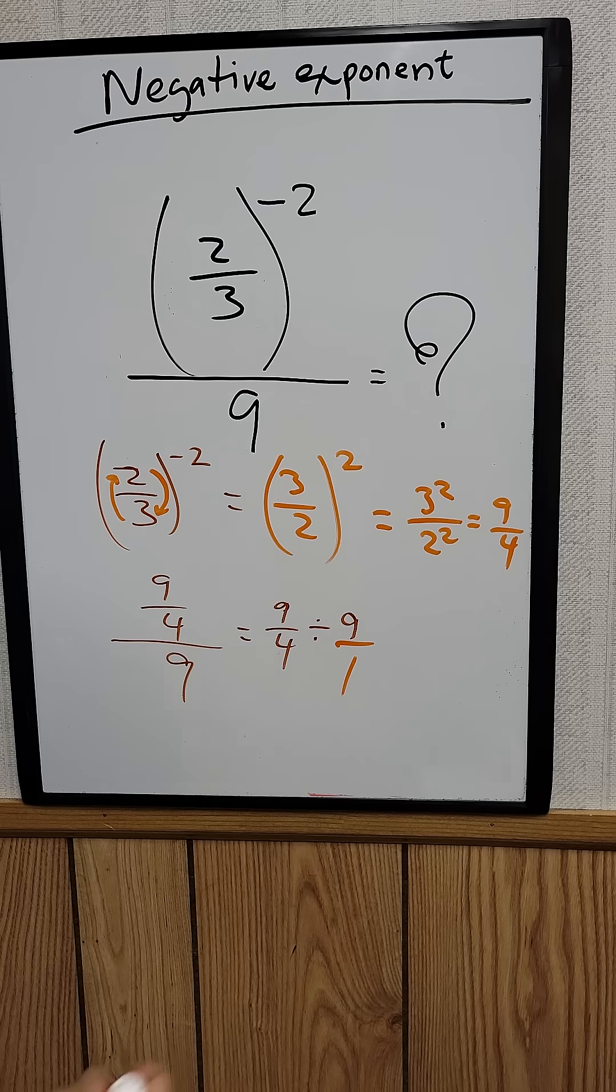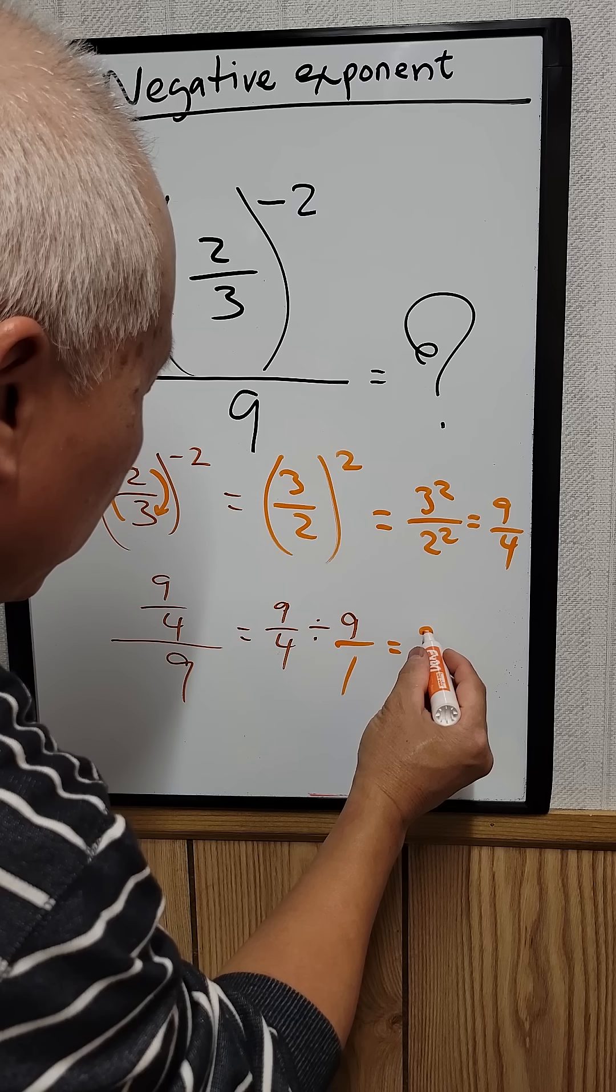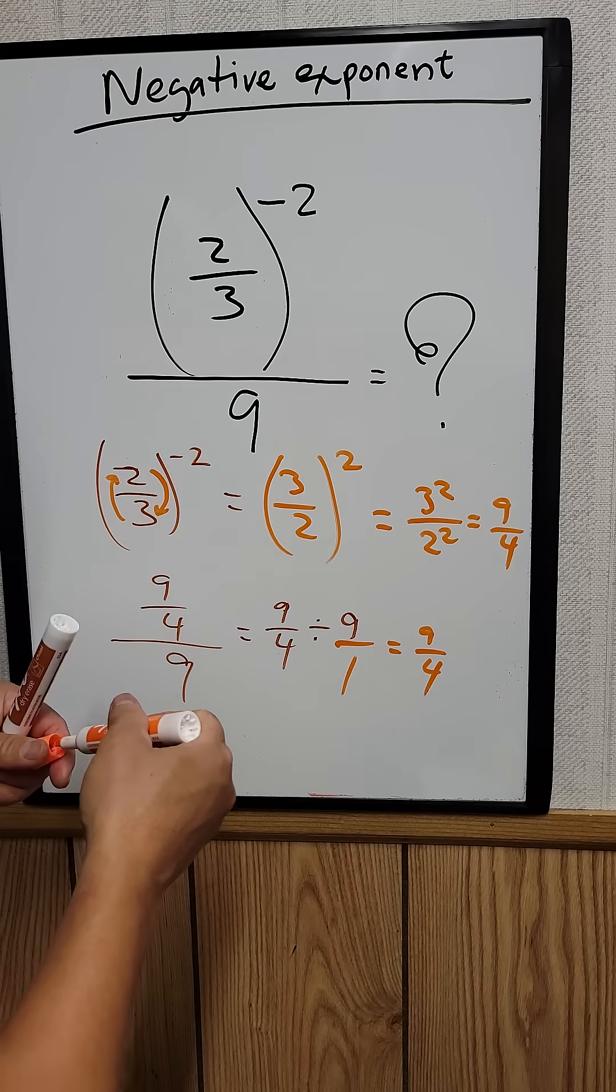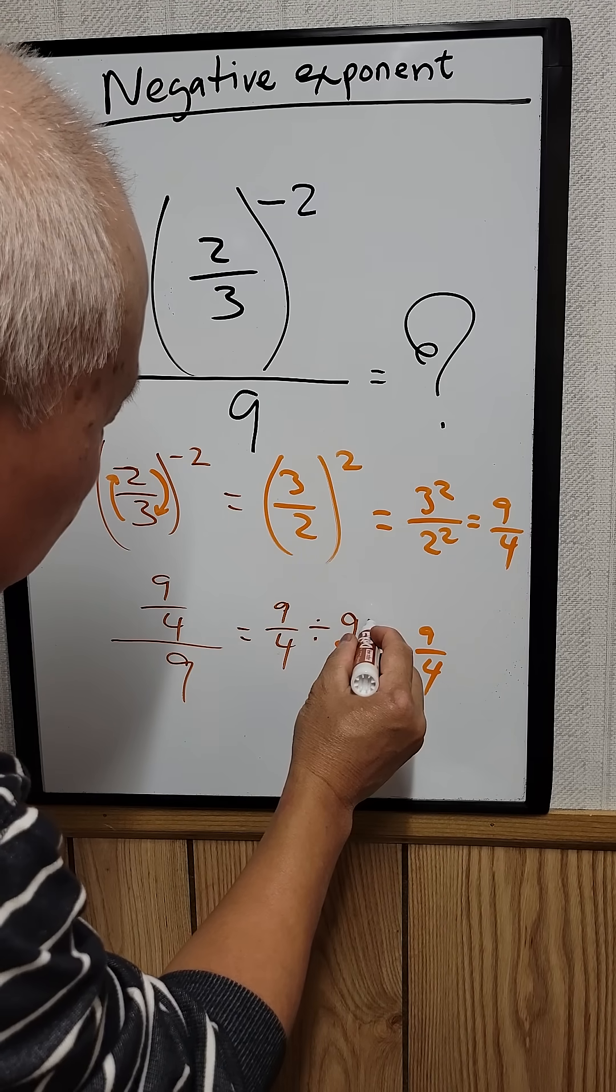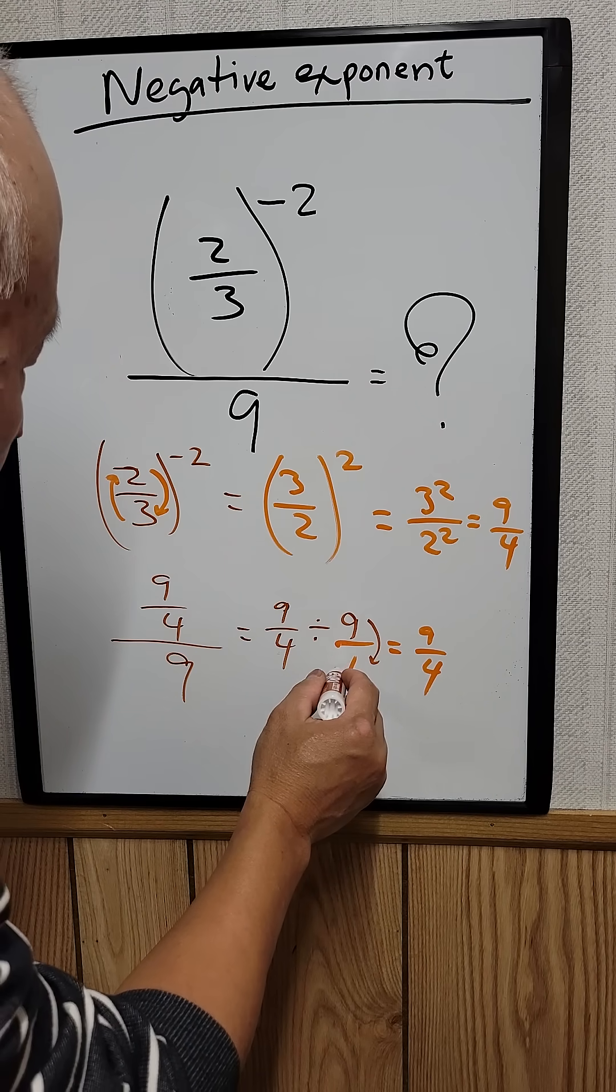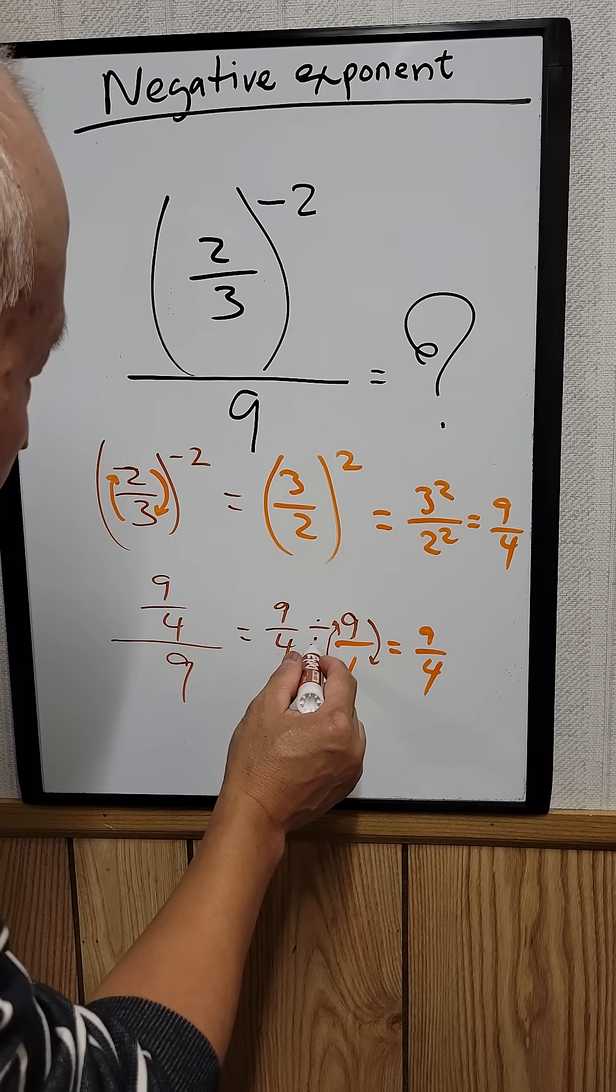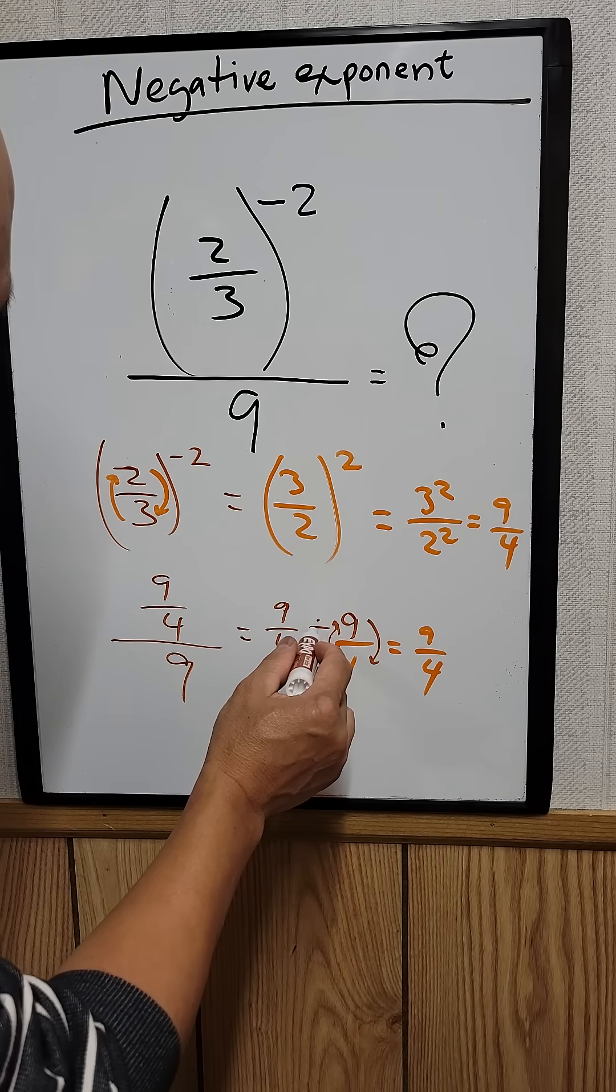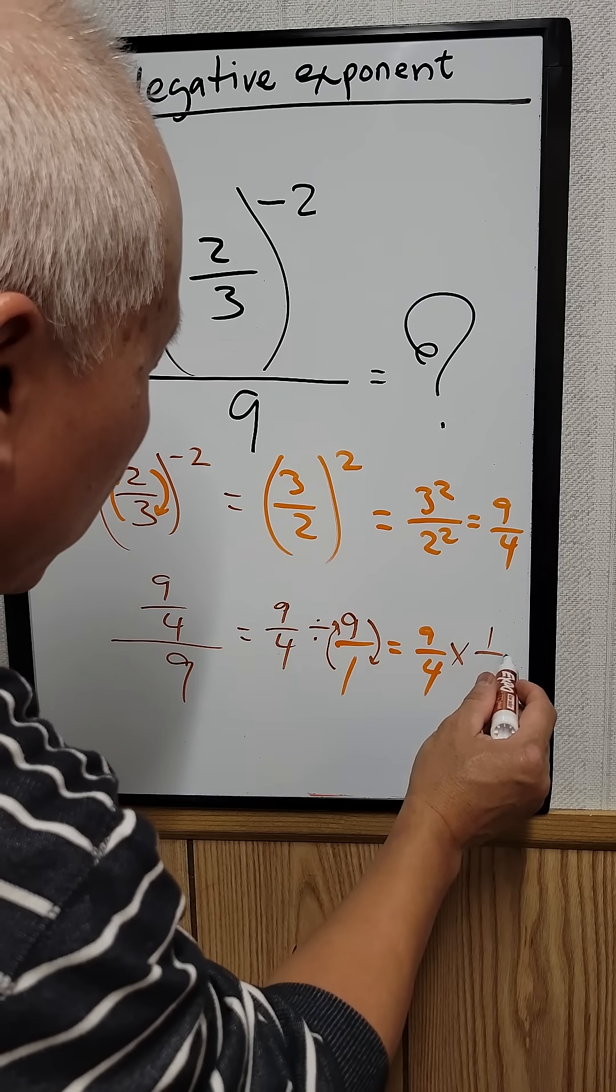Okay, so in order to divide that, what you need to do is just say 9 over 4. Now we use reciprocal again. So 9 becomes the denominator and 1 becomes the numerator. Now we need to change the division sign to multiplication sign, so be 1 over 9.